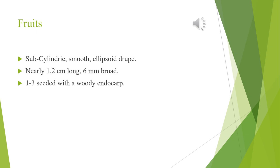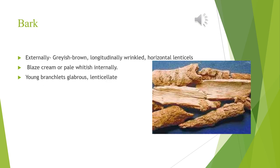Fruits are 1 to 3 seeded with a woody endocarp. Bark is greyish brown, longitudinally wrinkled and horizontally lenticellate. The outer surface is uneven and rough due to cracks; it is usually greyish brown to grey externally and pale whitish to brown internally. Young branchlets are glabrous and lenticellate.